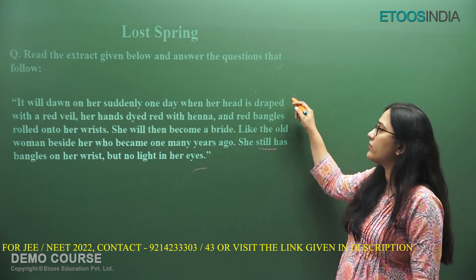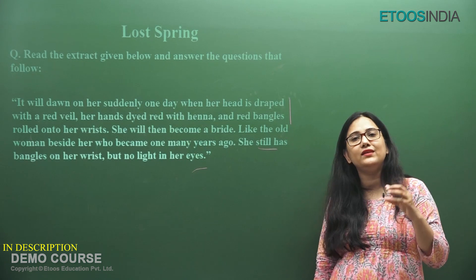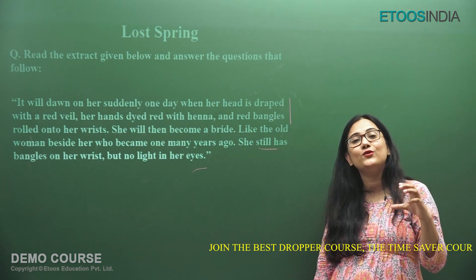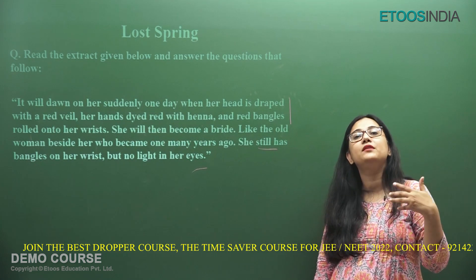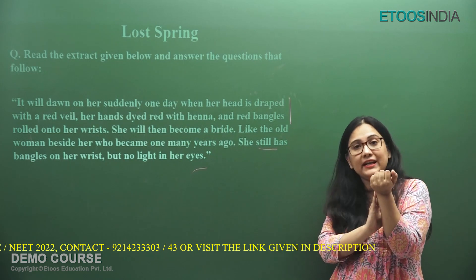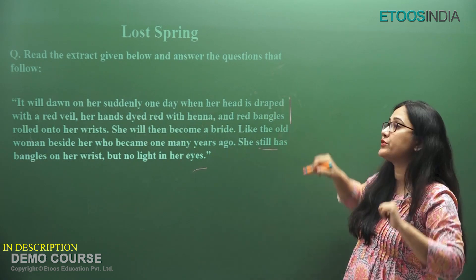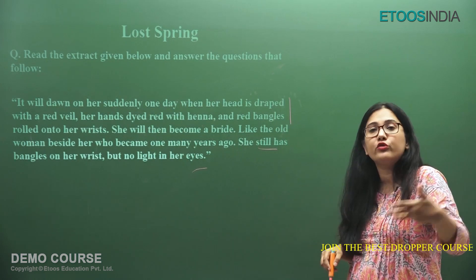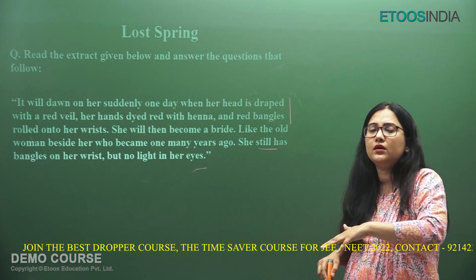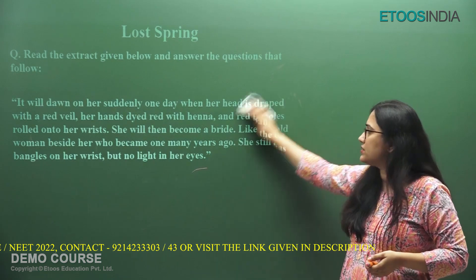About Savita: 'It will dawn on her one day when her head is draped with a red veil, her hands dried red with henna, and red bangles are rolled onto her wrist. She'll become a bride like the old woman beside her who still has bangles on her wrist but no light in her eyes.' The old woman is Savita's grandmother. 'No light in her eyes' means she has lost her eyesight due to bangle industry work, and also lost all joy in life. Savita does not yet know the importance of bangles as a symbol of marital bliss in Indian culture.